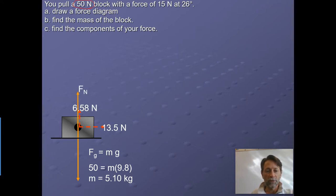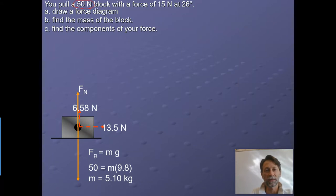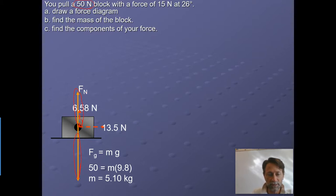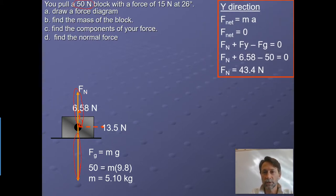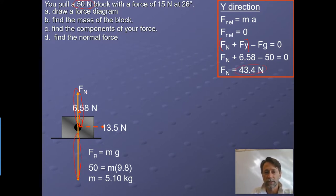Next, find the normal force. Is the block moving up or down? No — nothing in the problem indicates vertical movement. So the upward forces must balance the downward force: 50 Newtons pulling down is canceled by the Y component of my pull (6.58 N) plus the normal force. Setting up the equation: normal force plus the Y force minus gravity equals zero. Solving gives a normal force of 43.4 Newtons. So 43.4 plus 6.58 equals 50 Newtons — but remember, that's the weight, not the mass.